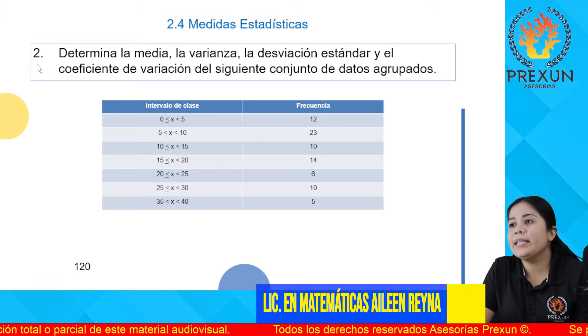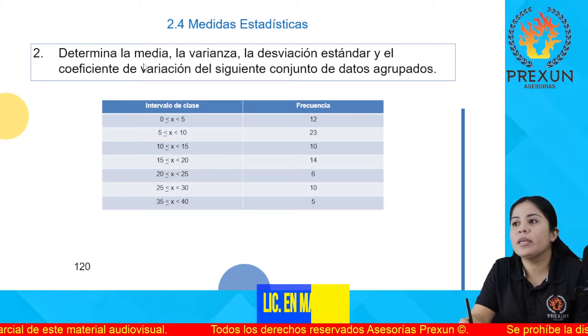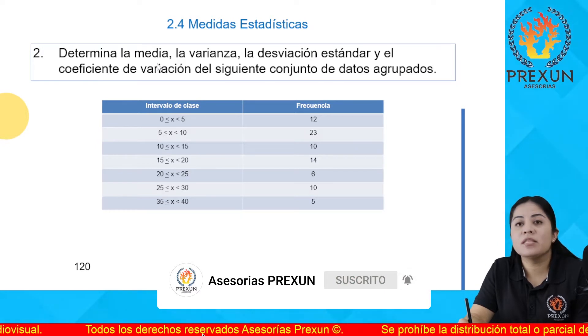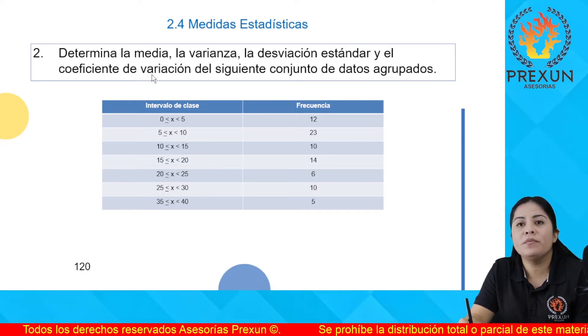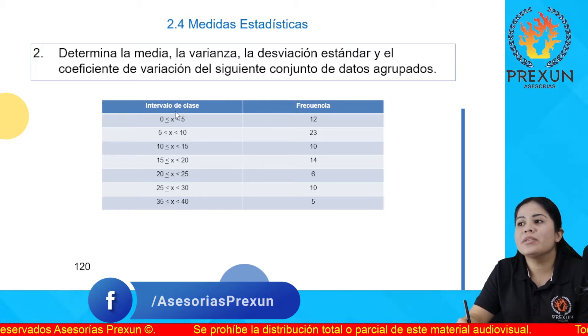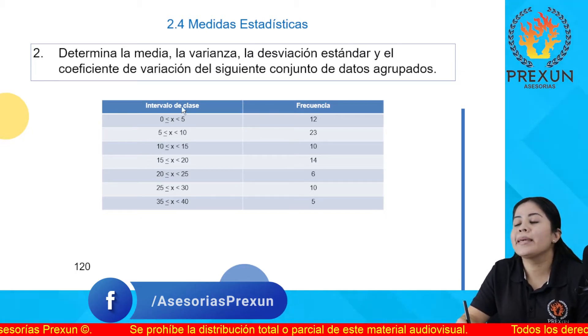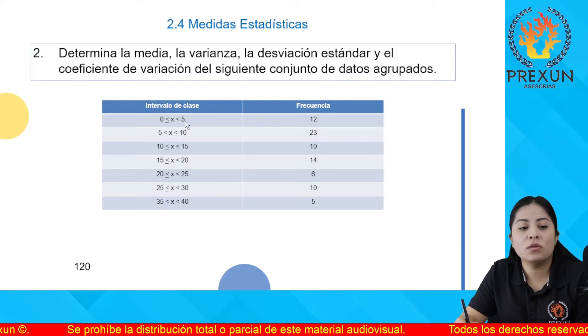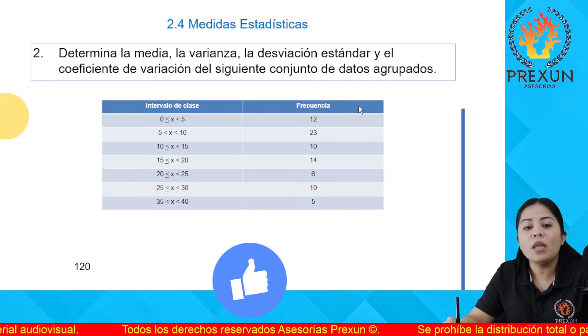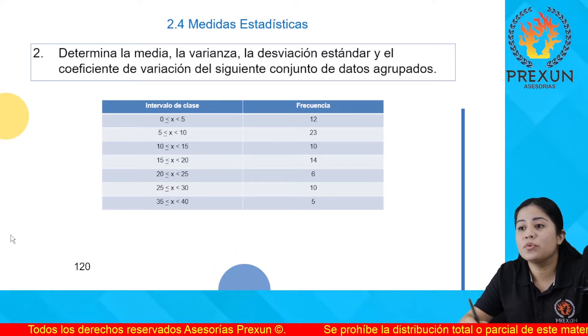Ok, continuando con el siguiente que es el del 2, nos pide que determinemos la media, la varianza, la desviación estándar y el coeficiente de variación para el siguiente conjunto de datos. Aquí nos están dando lo que es en esta primera columna las clases con las que se van a trabajar. Dada esta tabla, vamos a determinar estos conceptos.